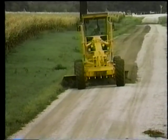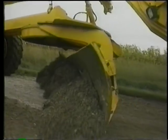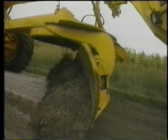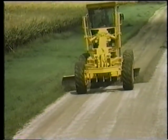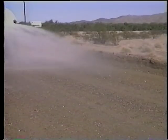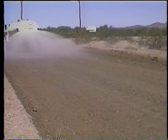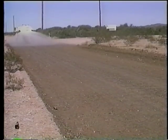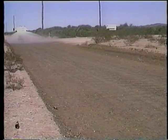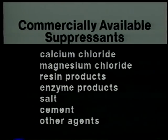Corrective measures for dusty or raveled roads start with replacing lost material. Fines can often be reclaimed from the shoulder edge, regraded, and mixed with the existing gravel as routine maintenance, along with restoring the road's crown. Dust is effectively combated only by adding palliatives or dust suppressants to the road surface. Water is the simplest suppressant, but commercially available suppressants make more sense. They include calcium chloride, magnesium chloride, resin products, enzyme products, salt, cement, and other agents.